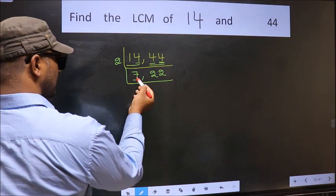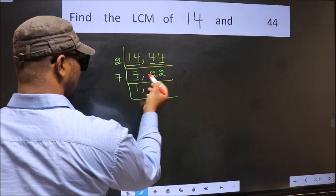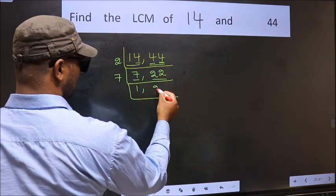Now here we have 7. 7 is a prime number, so 7 times 1 is 7. The other number 22 is non-divisible by 7, so we write it down as it is.